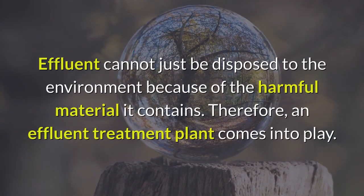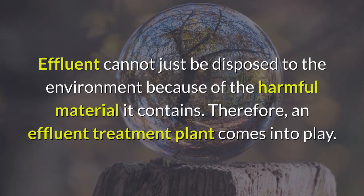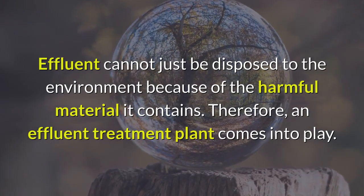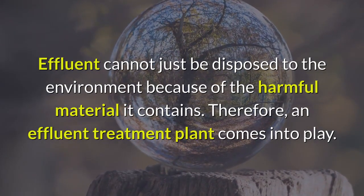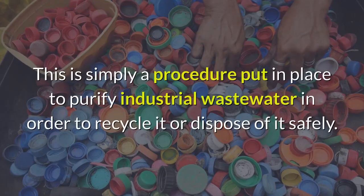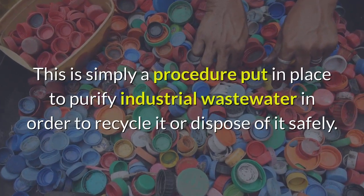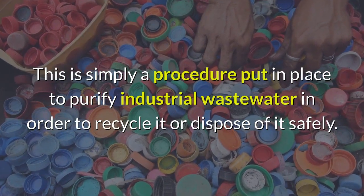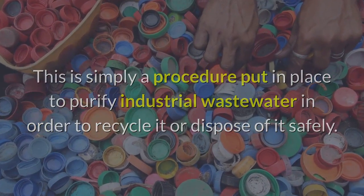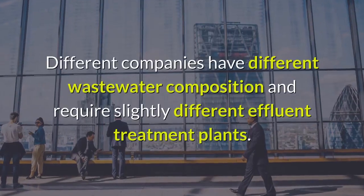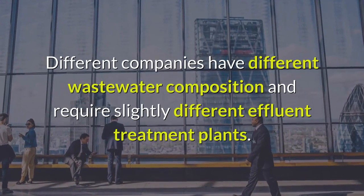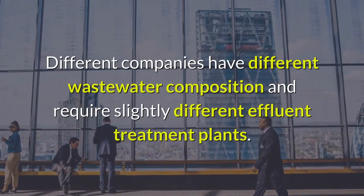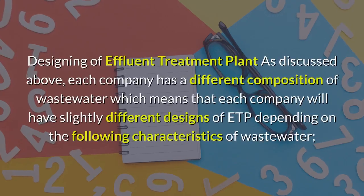Effluent cannot just be disposed to the environment because of the harmful materials it contains. Therefore, an effluent treatment plant comes into play. This is simply a procedure put in place to purify industrial wastewater in order to recycle it or dispose of it safely. Different companies have different wastewater compositions and require slightly different effluent treatment plants.